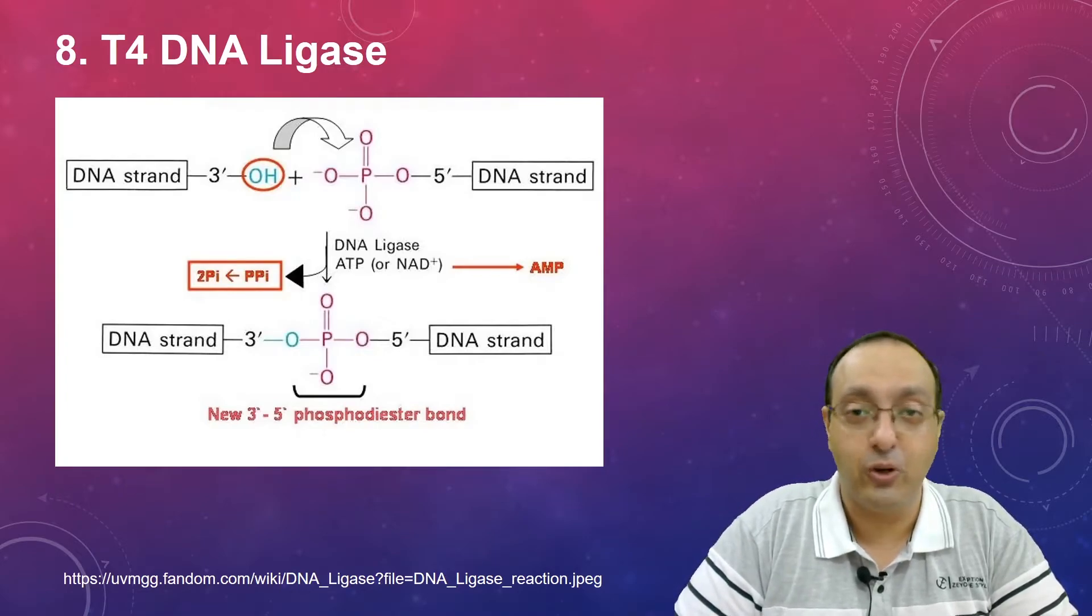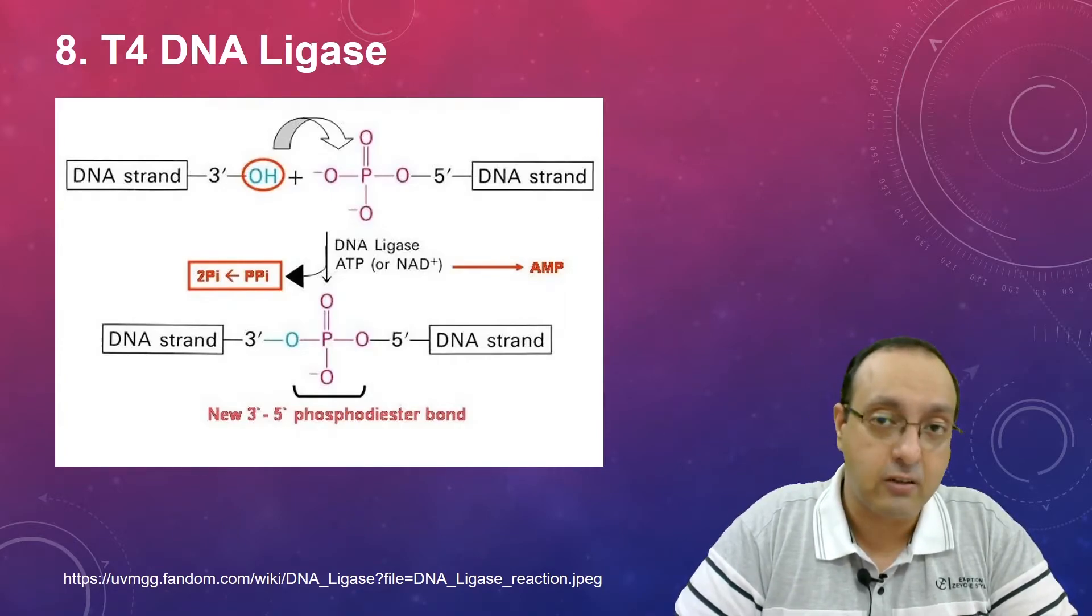Coming to ligases, and here we have just one ligase which is the T4 DNA ligase, hugely important. Although there is only one, this is isolated from phage T4. It catalyzes the phosphodiester bond formation between two DNA strands, so it is used for ligation and cloning.